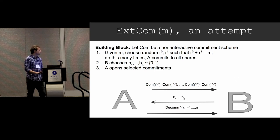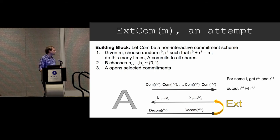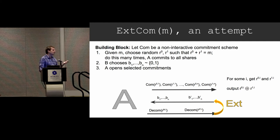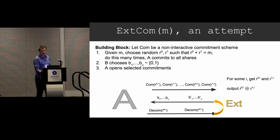It's straightforward to prove this is hiding and binding. For extraction, you might build an extractor that rewinds and sends B'1 through B'N, asking for new shares — one new share from each pair. For some i, you're going to get both R0i and R1i. That's the extraction: once you have that, you output the XOR and you've extracted.